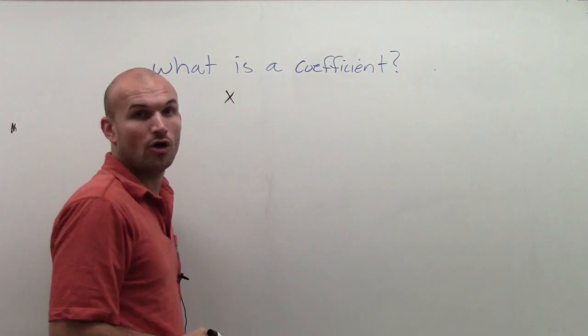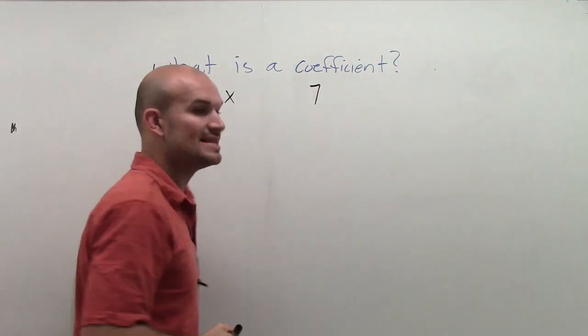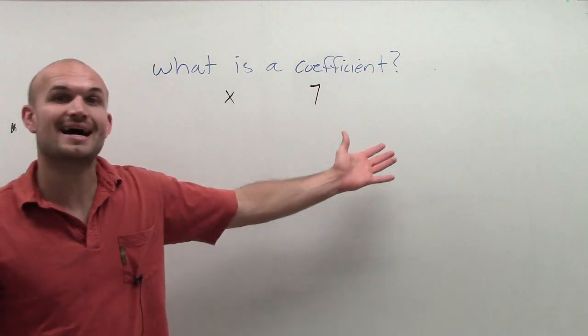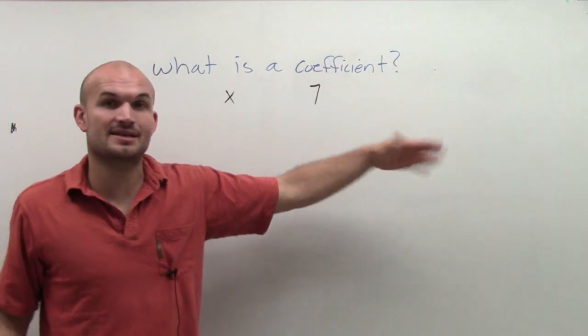You know, here's x. That's what we call a variable. When a number is not being multiplied by a variable, we call it a constant. So we have a variable and a constant. They're both terms.